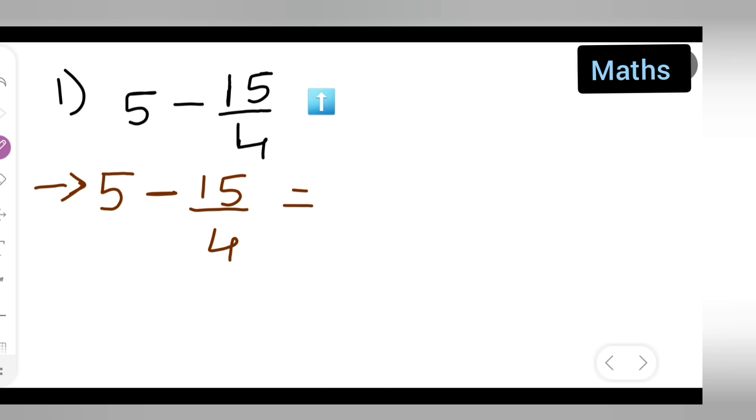Now basically this is equal to, 4 fives are 20. So 20 minus 15 upon 4. 4 fives are 20 minus 15 upon 4.